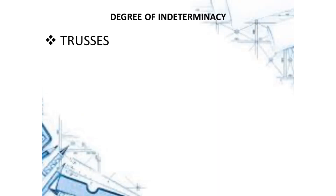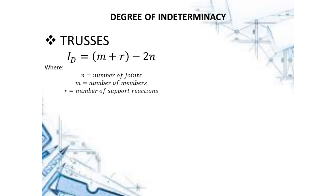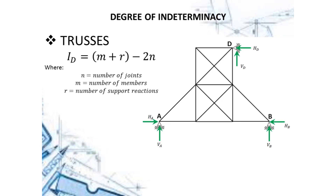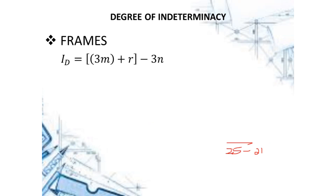For this midyear, the first discussion is the degree of indeterminacy. For trusses, the ID is equal to m plus r minus 2n, where n is the number of joints, m is the number of members, and r is the number of support reactions. Looking at this example figure, there are 15 members, six reactions, and eight joints. Substituting these values into the equation, the degree of indeterminacy for this truss is equal to 5.